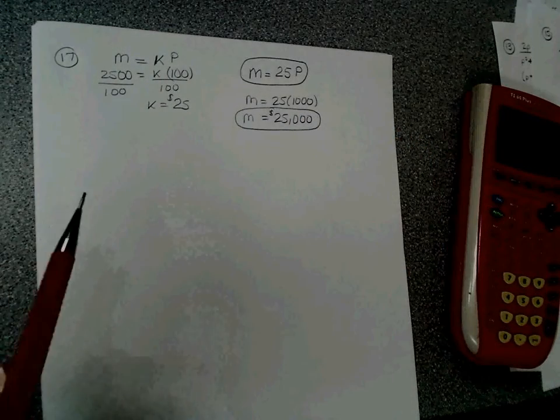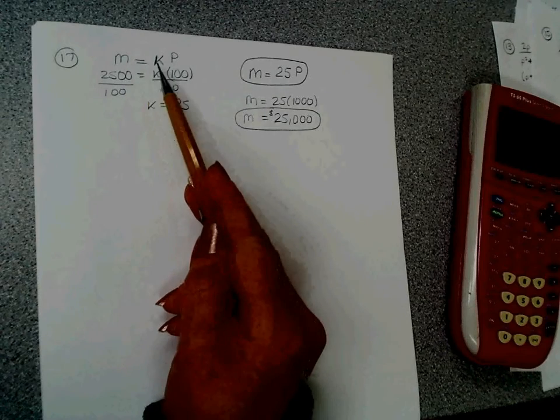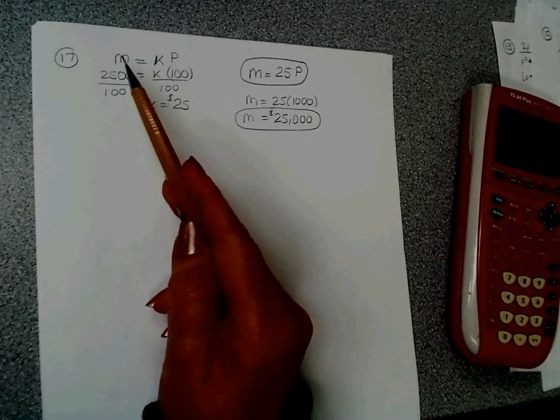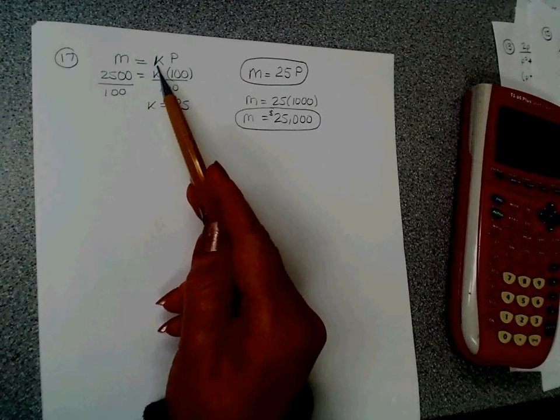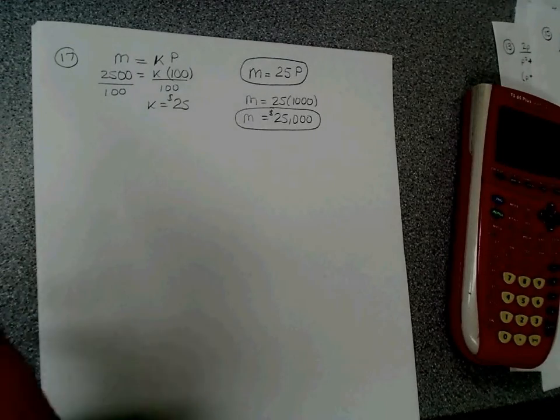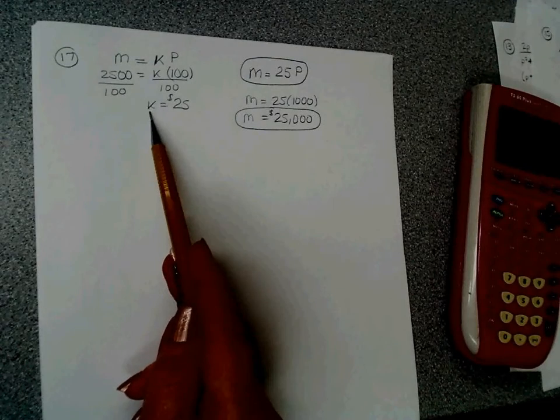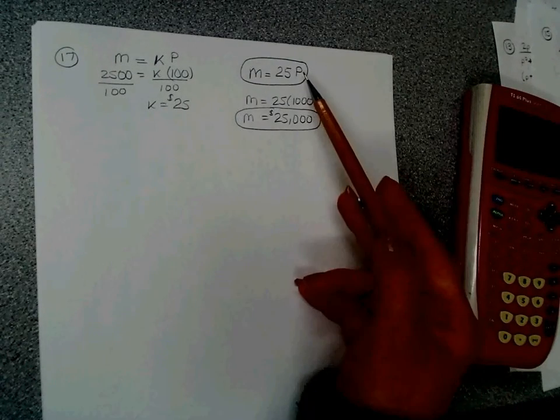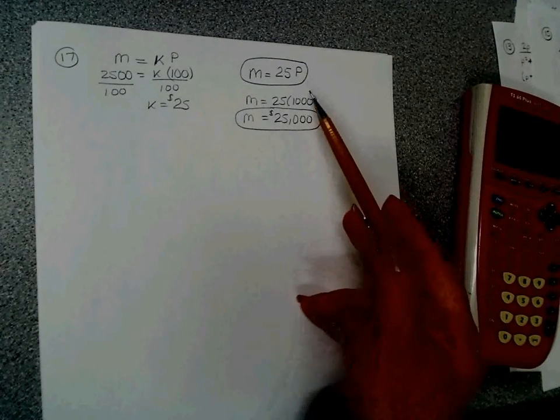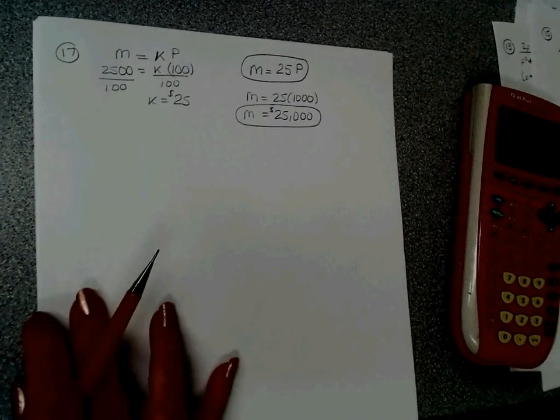So step one, figure out what kind of variation. This one said direct, so m equals kp. Direct is something equals a constant k times something else. It's just straight across. Then I used what they gave me for last year to figure out k, and then I take that k and plug it back in, and then I use that data to figure out this year. And that's number 17.